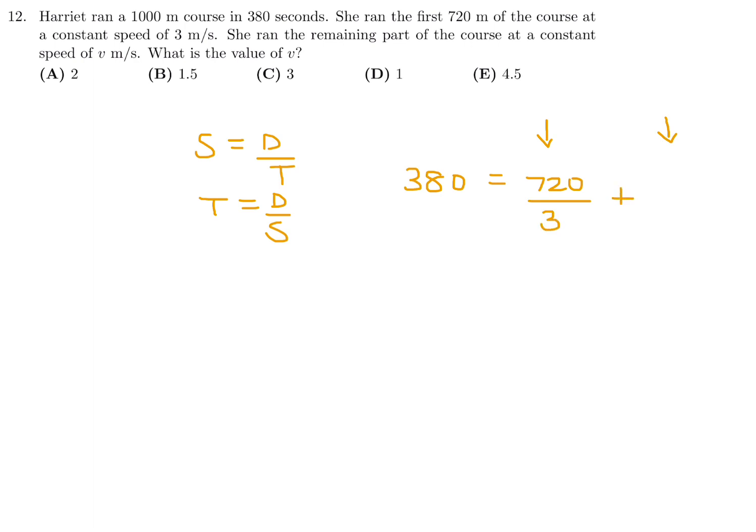The first is when she runs 720 meters at a speed of 3 meters per second. And the second time comes from the remainder, which would be 1,000 minus 720. And then that speed is V. I think I can solve this. 380 is equal to 720 over 3 is 240, plus 280 over V. So that means 140 is equal to 280 over V. V is equal to 280 over 140. Therefore, V is equal to 2. Number 12, the choice would be A.